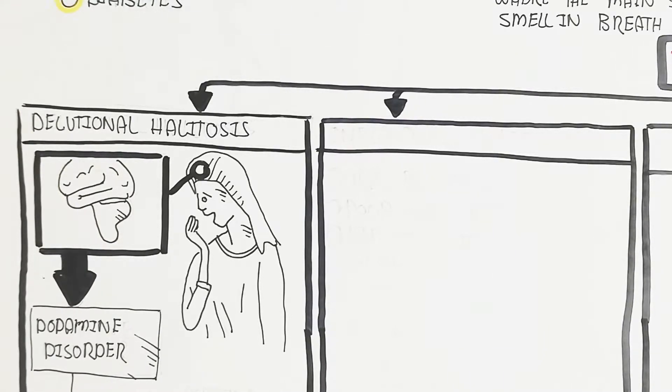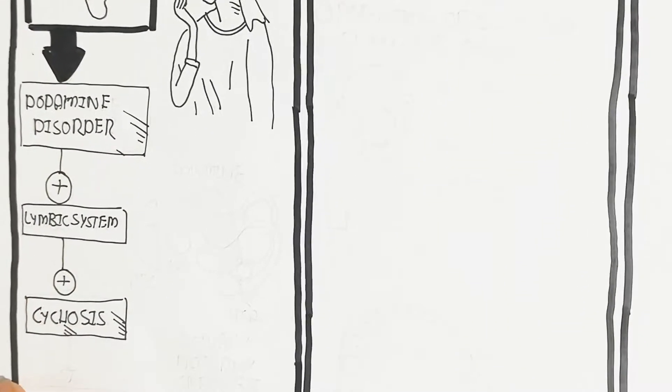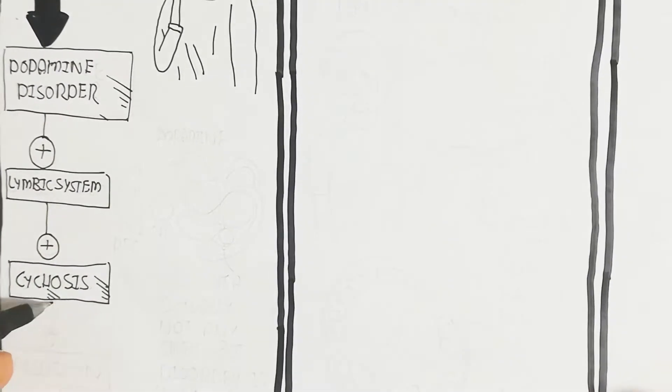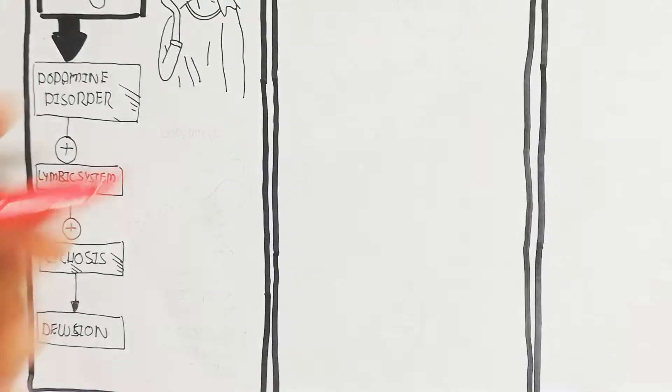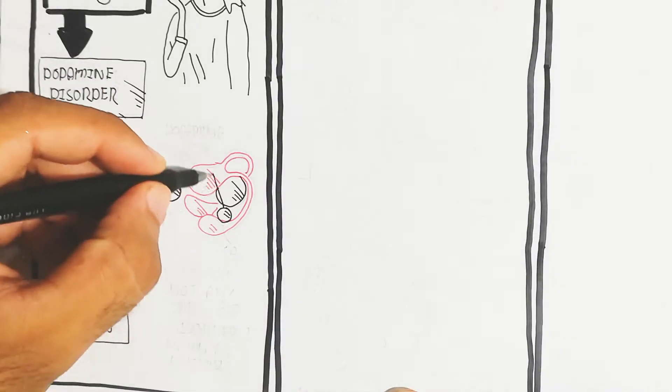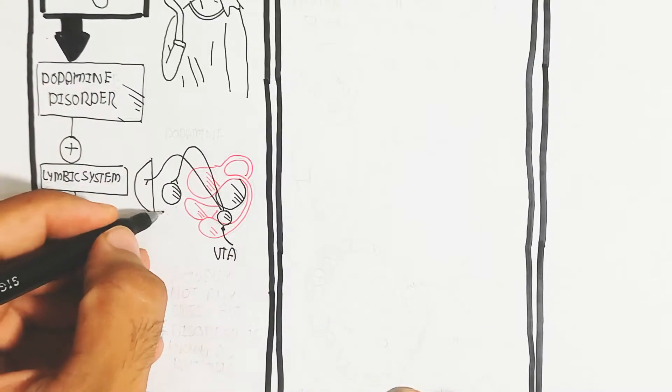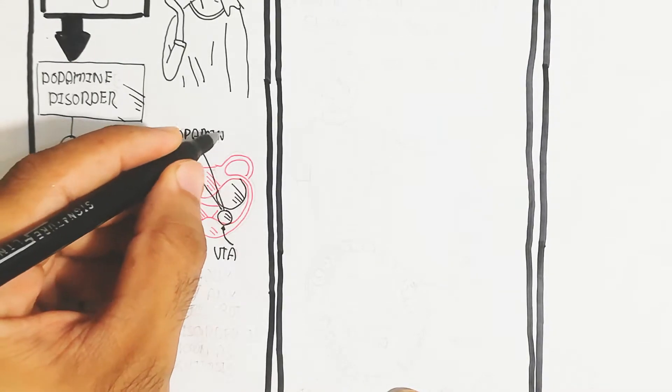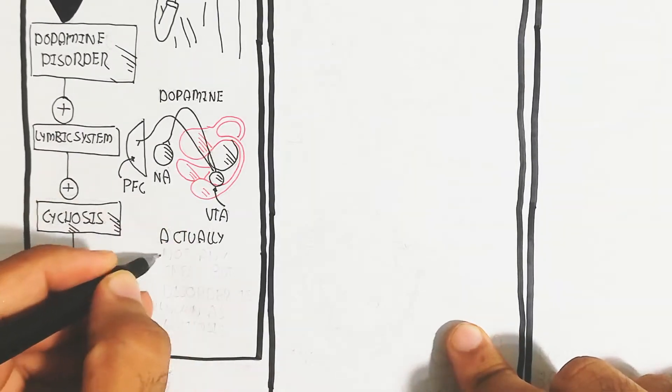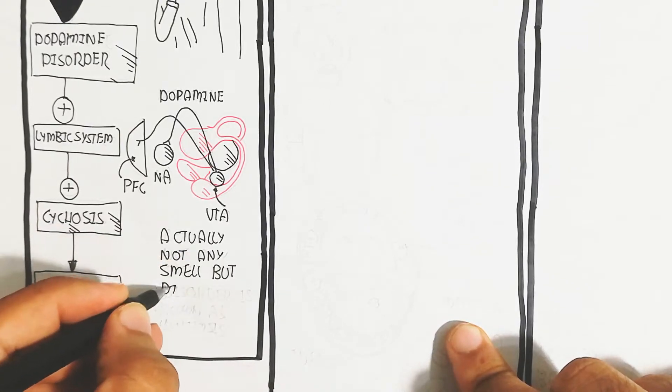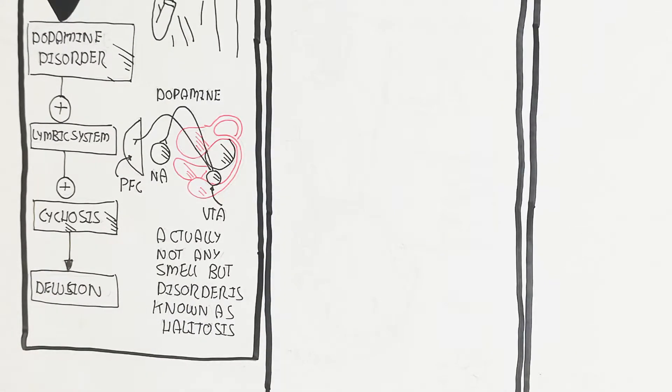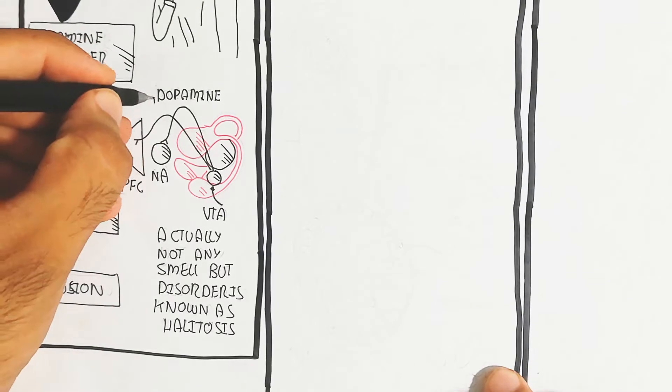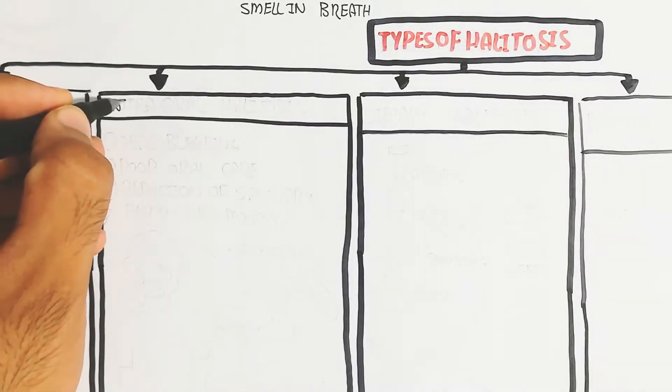In this condition, dopamine disorder occurs. The limbic system activates and the psychosis leads to delusion. Here is the limbic system which contains VTA nuclei and nucleus accumbens. It releases dopamine overproduction which targets the nucleus accumbens and prefrontal cortex. There is actually no smell, but the disorder is known as Halitosis.